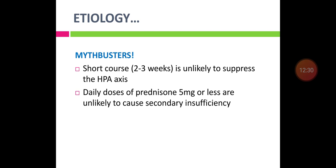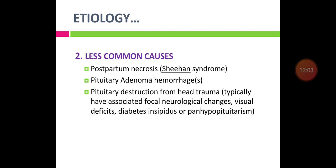There is a false belief that even short courses or steroid doses of 5 mg or less will suppress the HPA axis, but this is not true. Short courses of 2–3 weeks are unlikely to suppress the HPA axis. Daily doses of 5 mg or less are unlikely to cause secondary adrenal insufficiency. Other less common causes include postpartum necrosis (Sheehan's syndrome), pituitary adenoma hemorrhage, and pituitary destruction from head injury, often presenting with focal neurological deficits and pan-hypopituitarism.